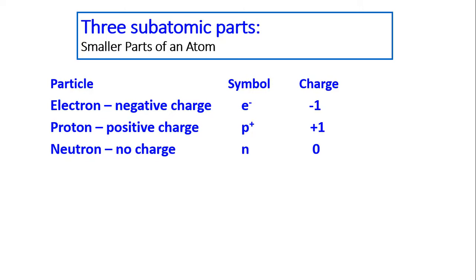There are three subatomic parts, smaller parts of an atom. We have an electron. It has a negative charge. Its symbol is e with a negative sign, and its charge is negative one.